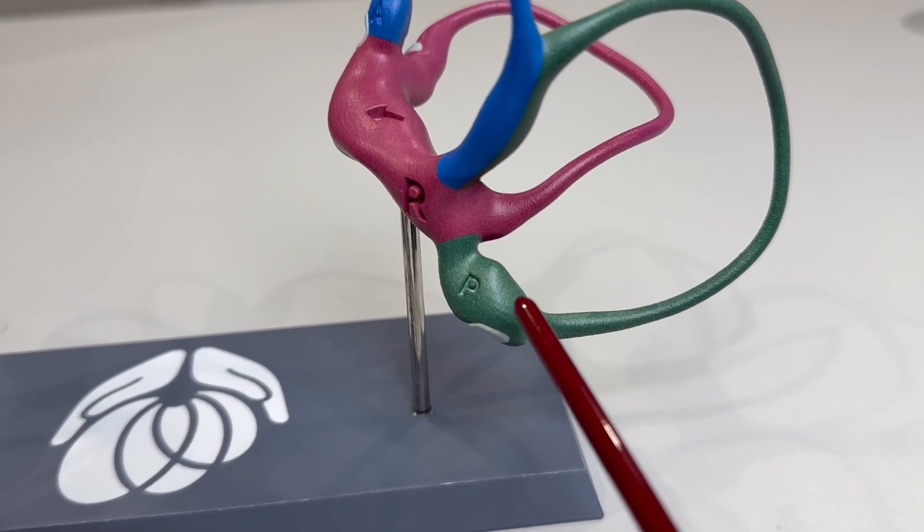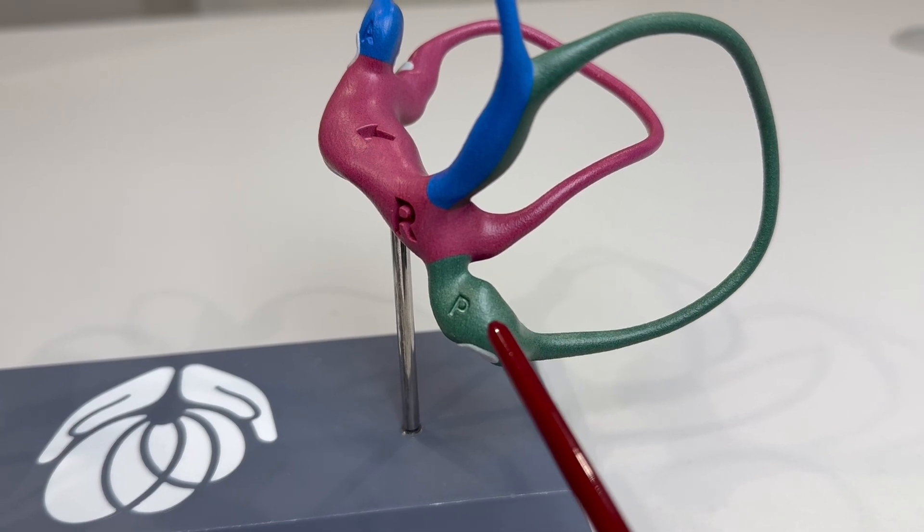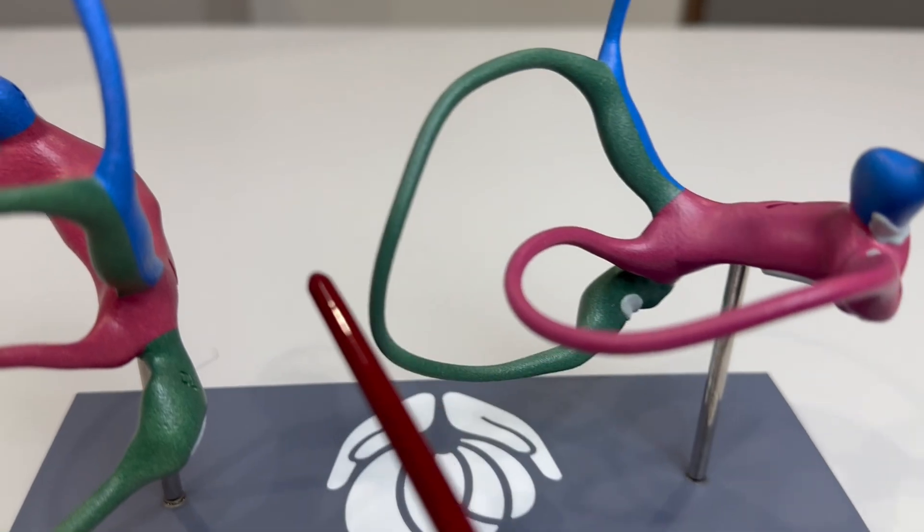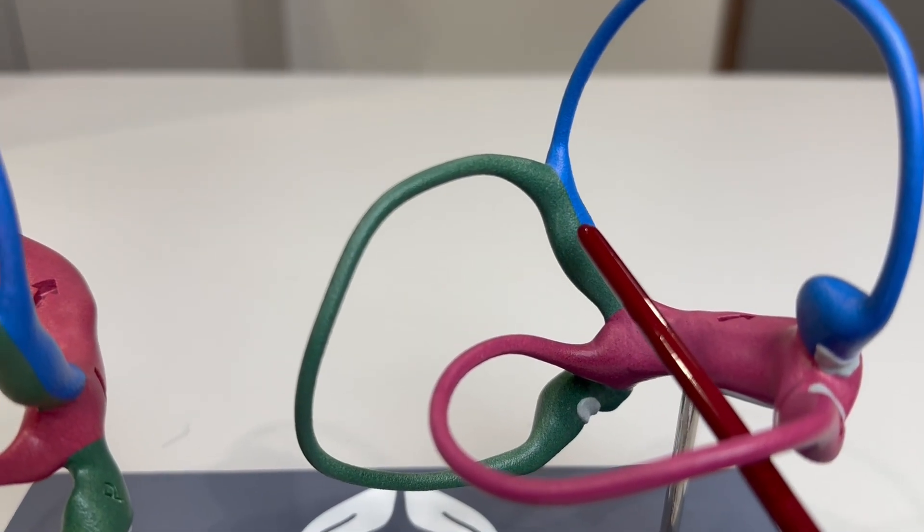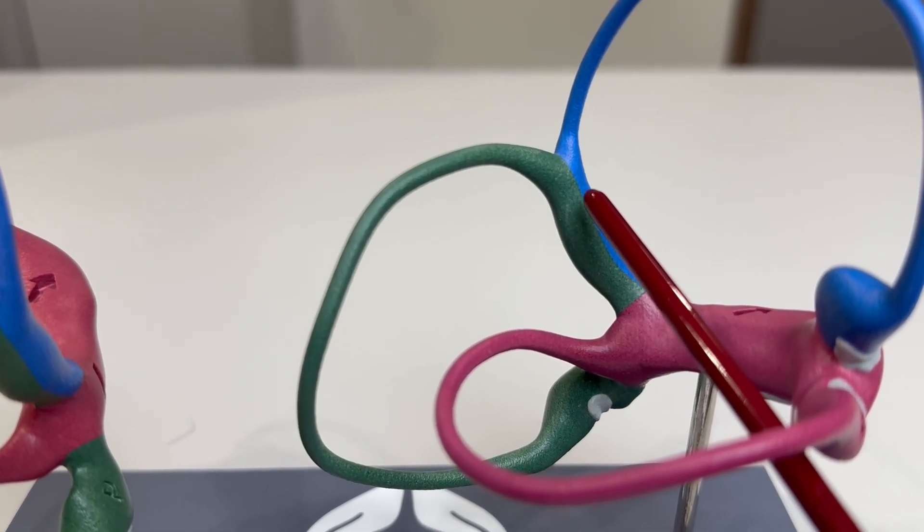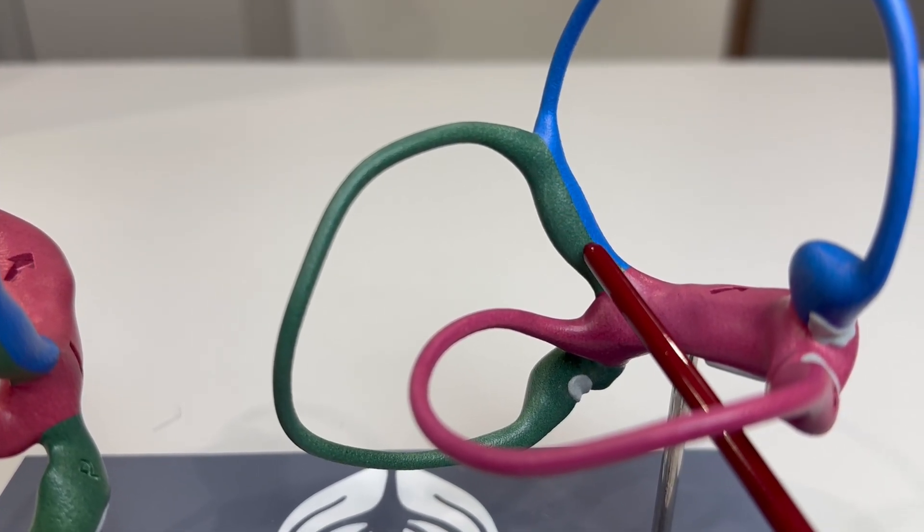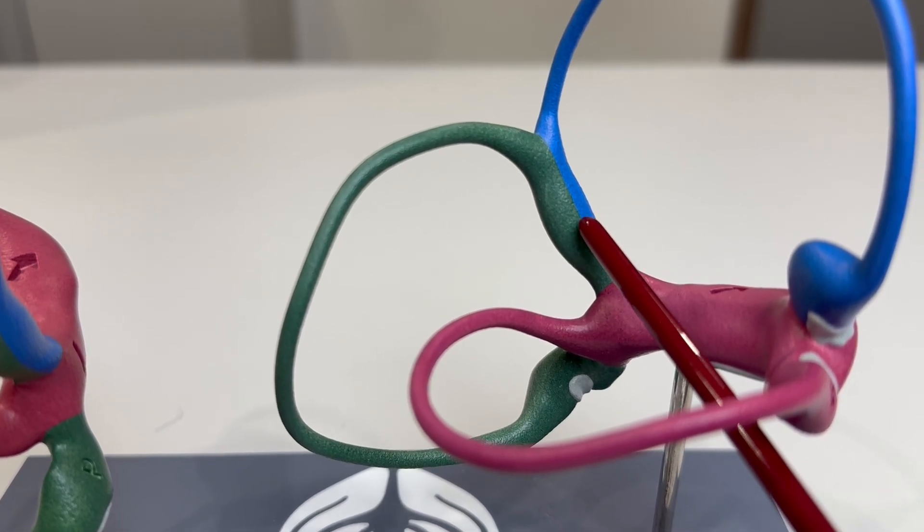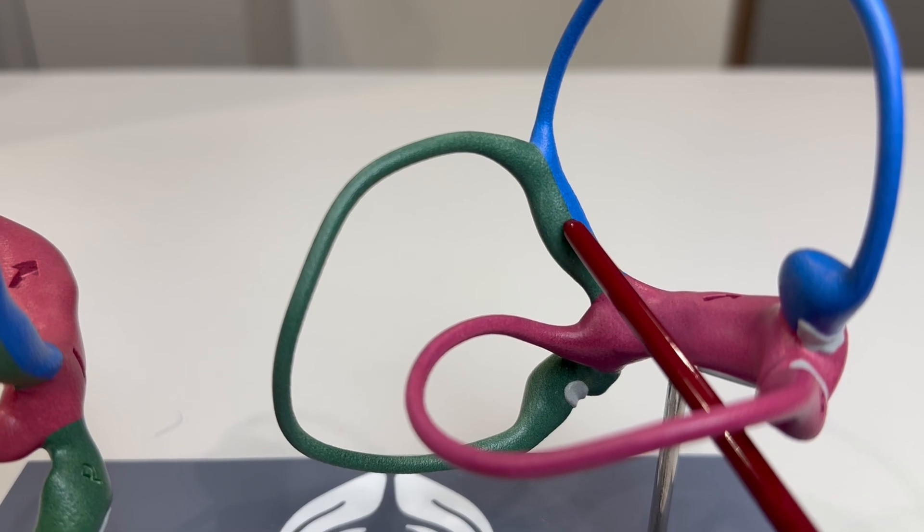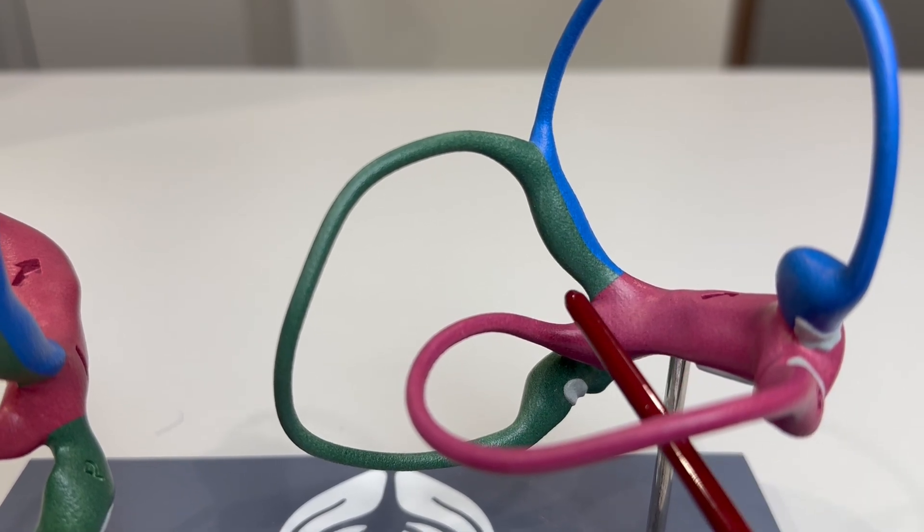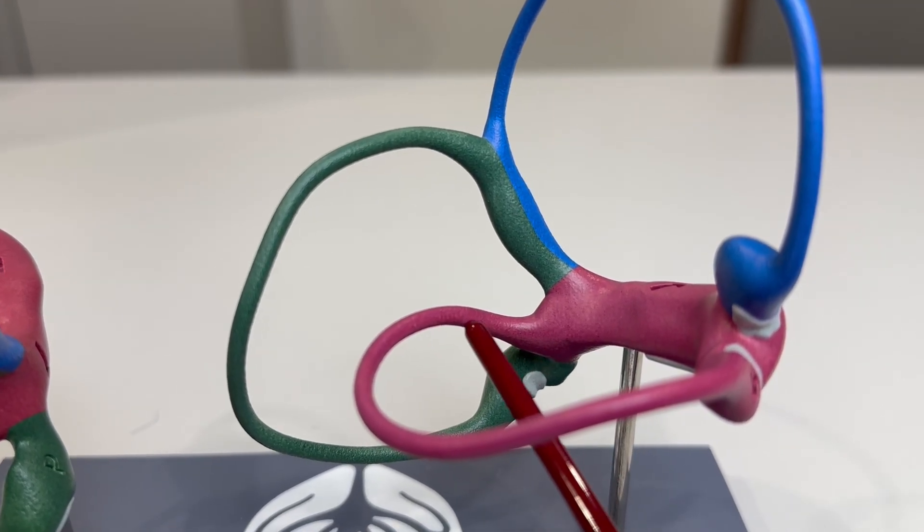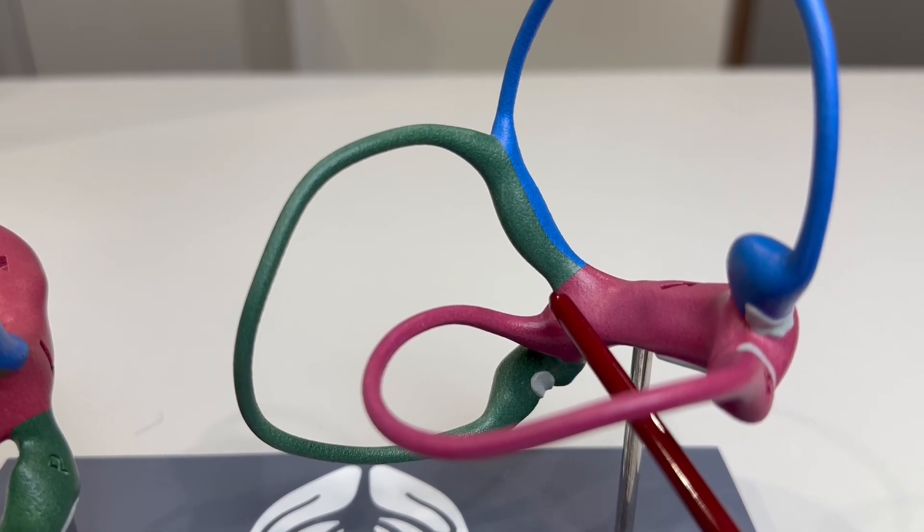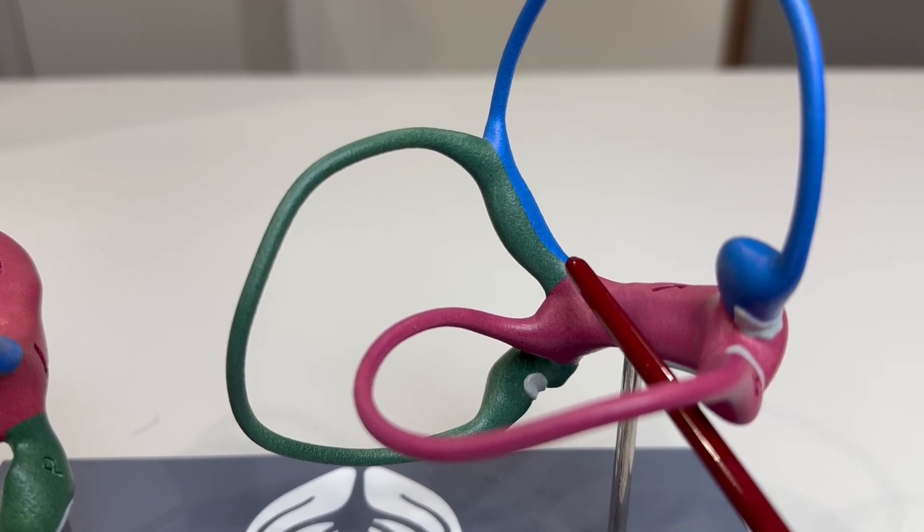The ampulla houses the sensory receptor that detects movement of the endolymph. It's important to know that the anterior and posterior canals share a common starting segment called the crux commune, which serves as a shared pathway for both canals.